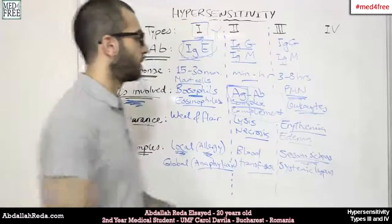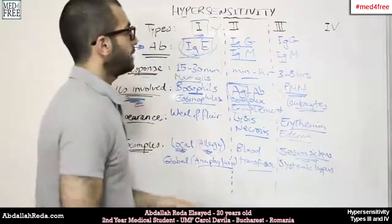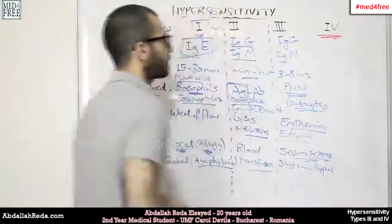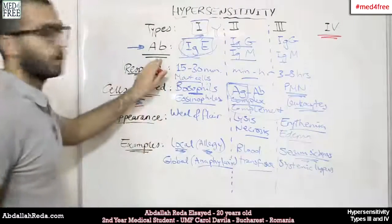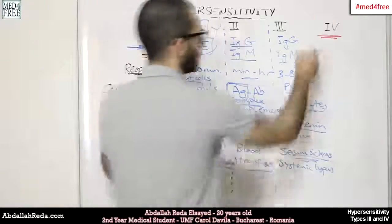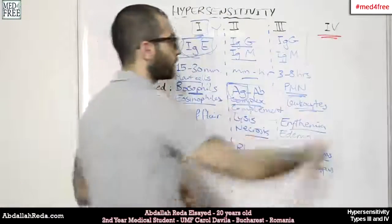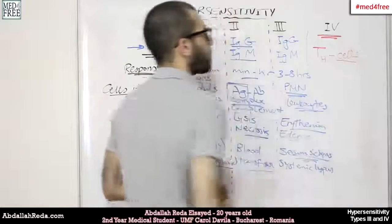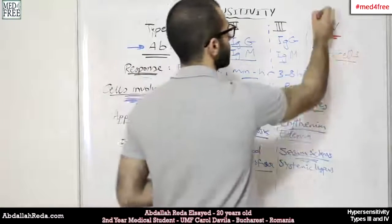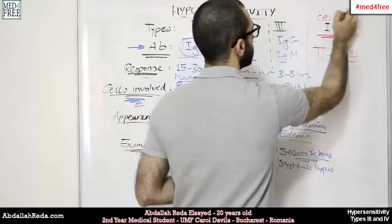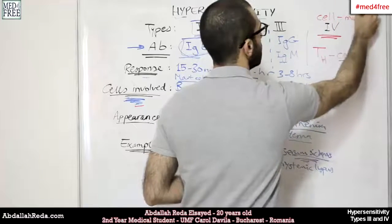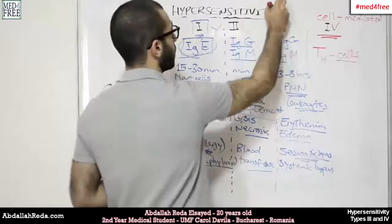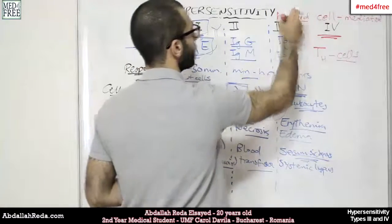With the last type of hypersensitivity, type 4, we have a difference because there are no antibodies involved. The cells that are involved are the T helper cells. This type of hypersensitivity is called cell-mediated, while all the previous three are called humoral-mediated.